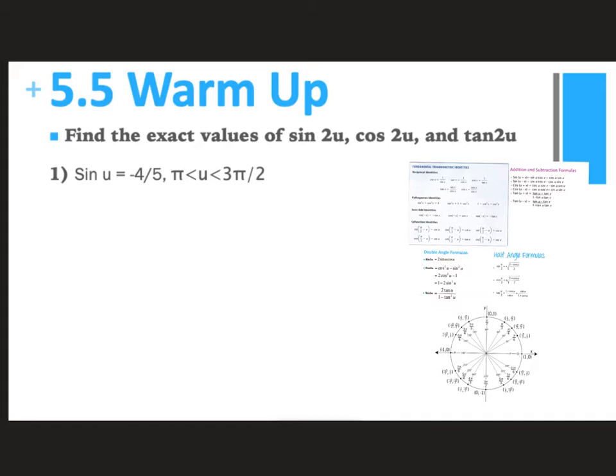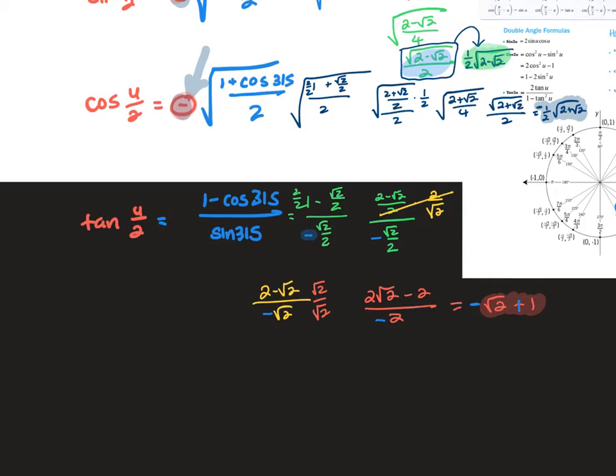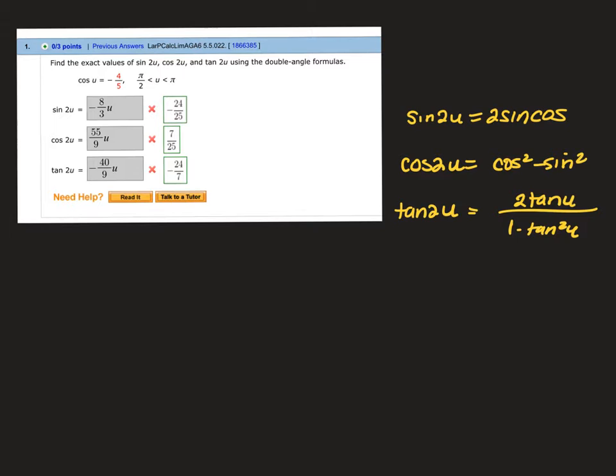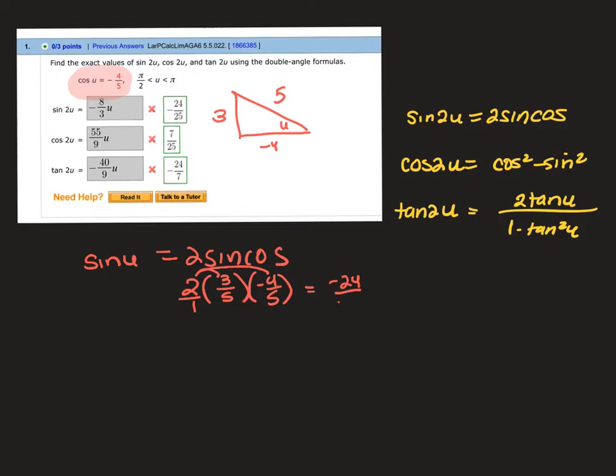So I'm going to first say that my triangle is in quadrant 3. If you're given sine of u is negative 4 fifths and it's in the third quadrant, that means back 4, up 3, and sine 2u would be 2 sine cosine, 2 times 3 fifths times negative 4 fifths over 1, that's 6 times 4, that's negative 24 over 5 times 5, which is 25.